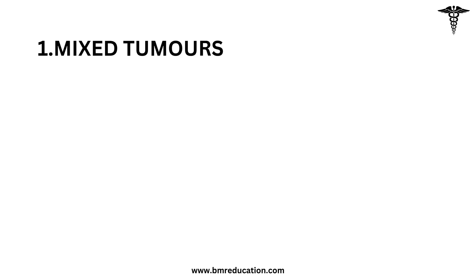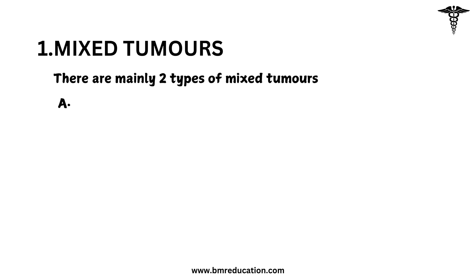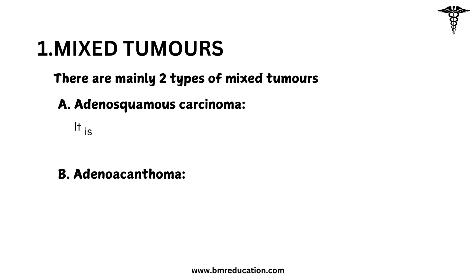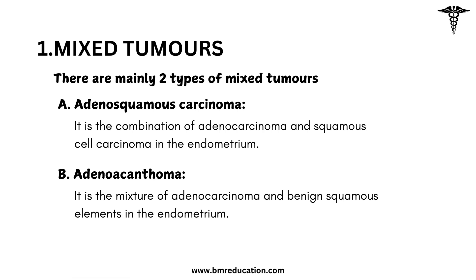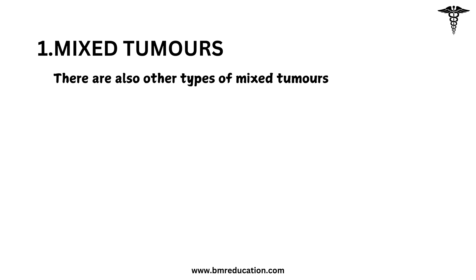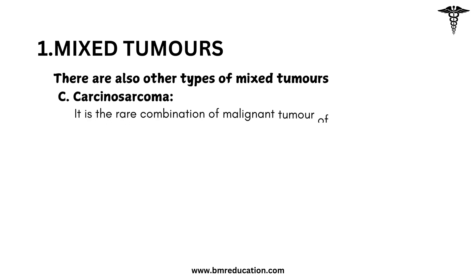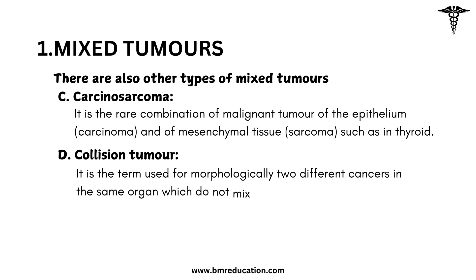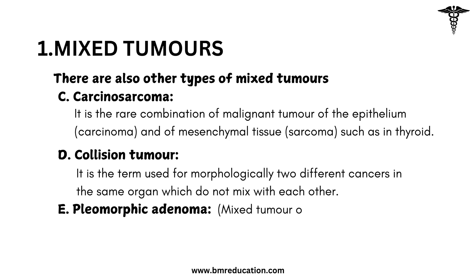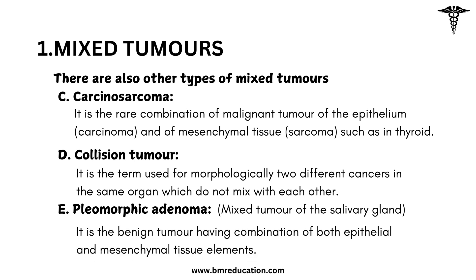Let's understand each type. Mixed tumors are mainly two types: adenosquamous carcinoma and adenoacanthoma. Adenosquamous carcinoma is the combination of adenocarcinoma and squamous cell carcinoma in the endometrium. Adenoacanthoma is the mixture of adenocarcinoma and benign squamous elements in the endometrium. There are also other types: carcinosarcoma, which is the rare combination of malignant tumor of the epithelium and mesenchymal tissue such as in the thyroid; collision tumor, the term for two morphologically different cancers in the same organ that do not mix; and pleomorphic adenoma or mixed tumor of the salivary gland, a benign tumor having a combination of both epithelial and mesenchymal tissue elements.